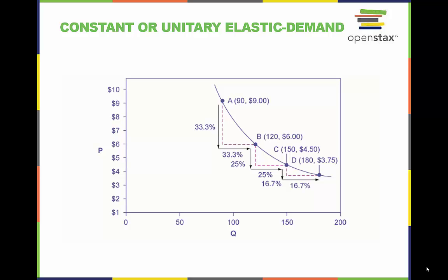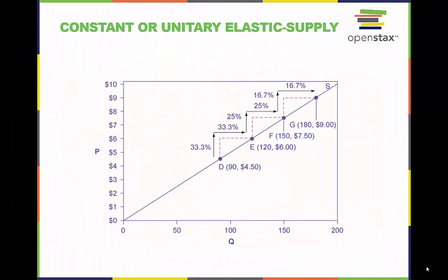Notice how price and quantity demanded change by an identical amount or constant percentage in each step down the demand curve. A constant unitary elasticity supply curve is a straight line reaching up from the origin. Between each point, the percentage increase in quantity supplied is the same as the percentage increase in price.